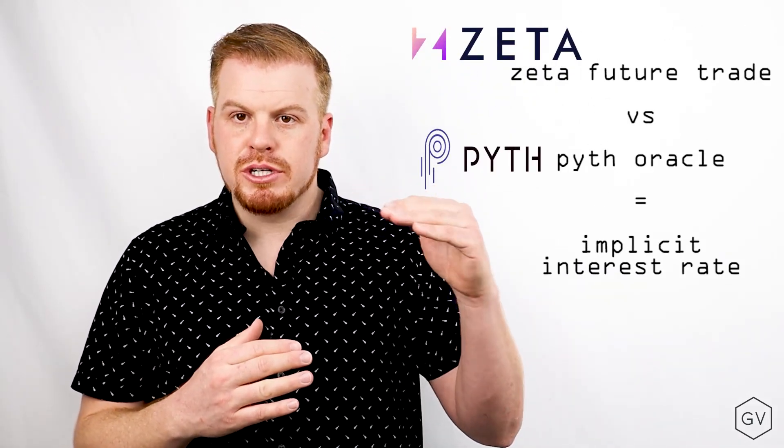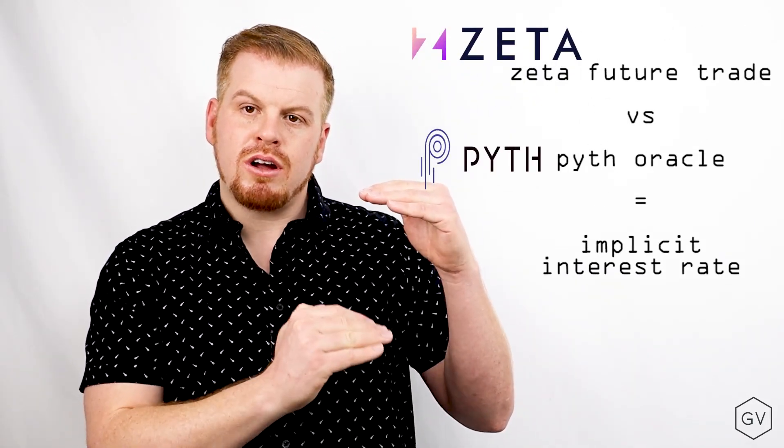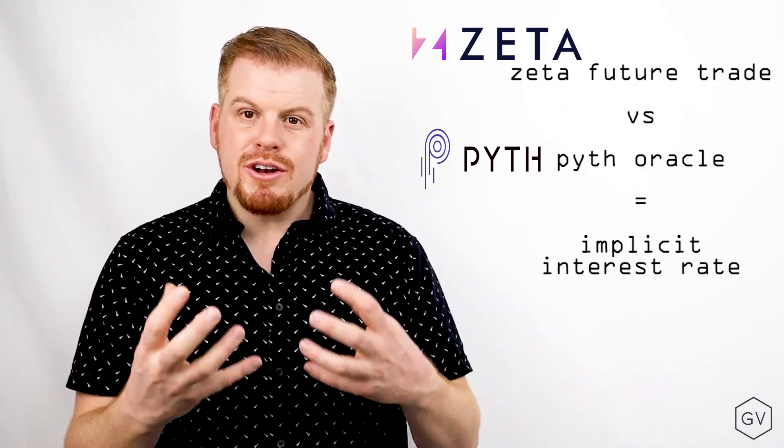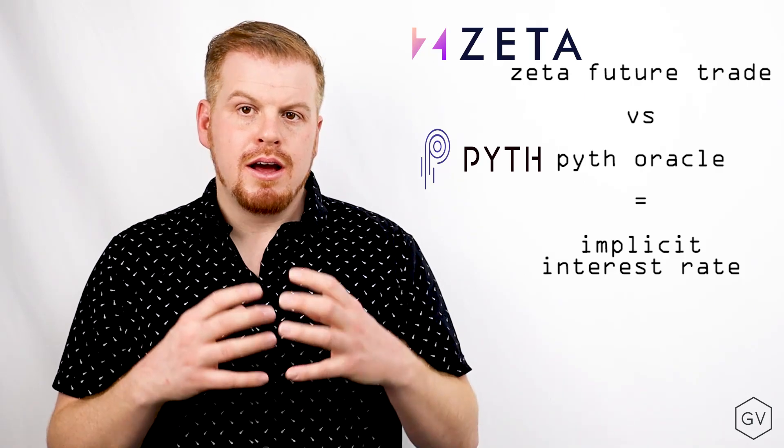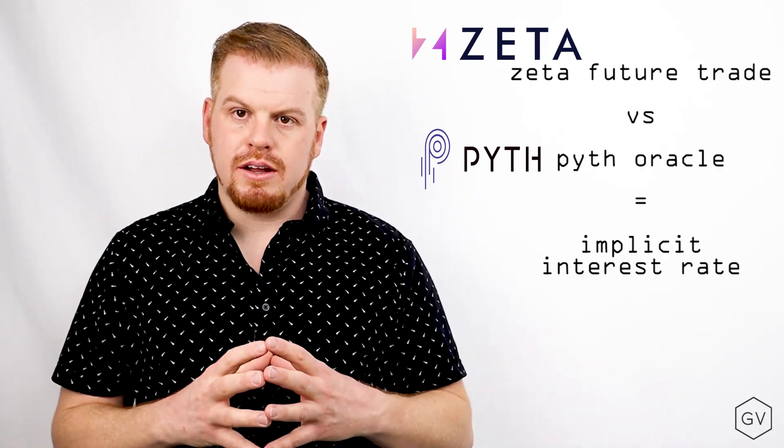There's also the component of interest rates. Interest rates are going to be determined by the trading difference of the futures price versus the underlying spot price. The underlying spot price is piped in from the Pyth network. Pyth is an oracle system built on Solana.